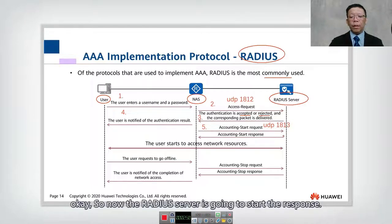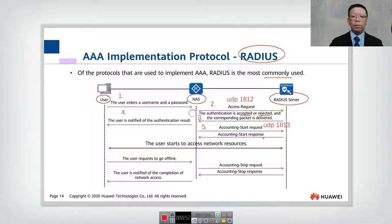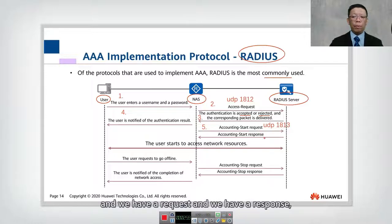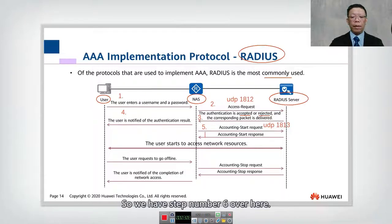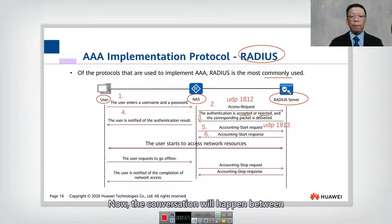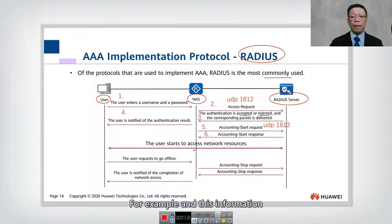The RADIUS server starts its response — accounting now starts — and we have a request and a response. That is step number six. The conversation will then happen between the user and, for example, the internet, and this information will be logged by the RADIUS server.